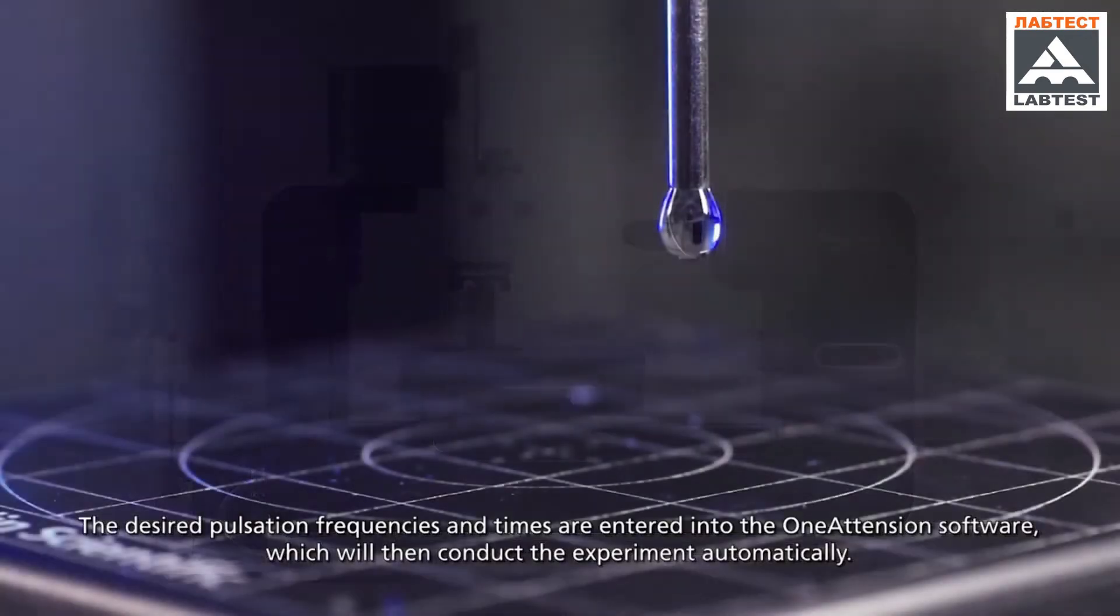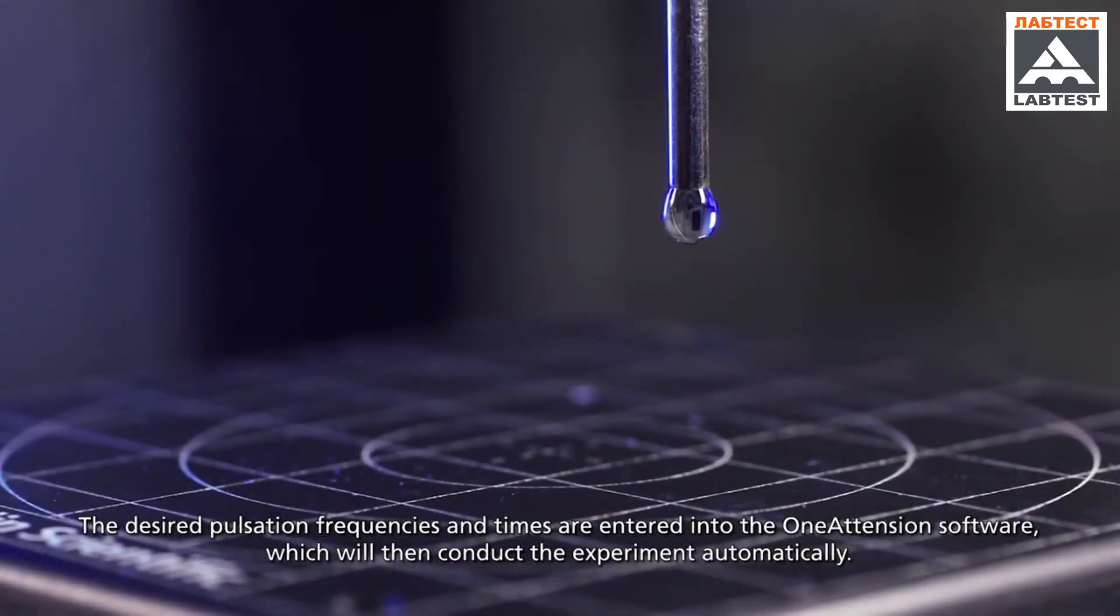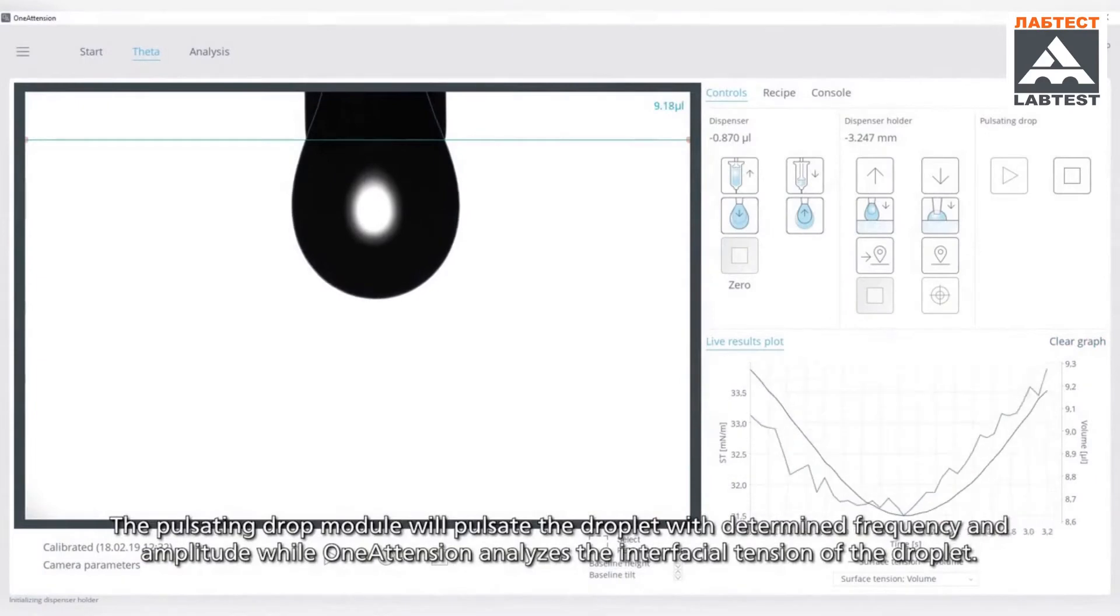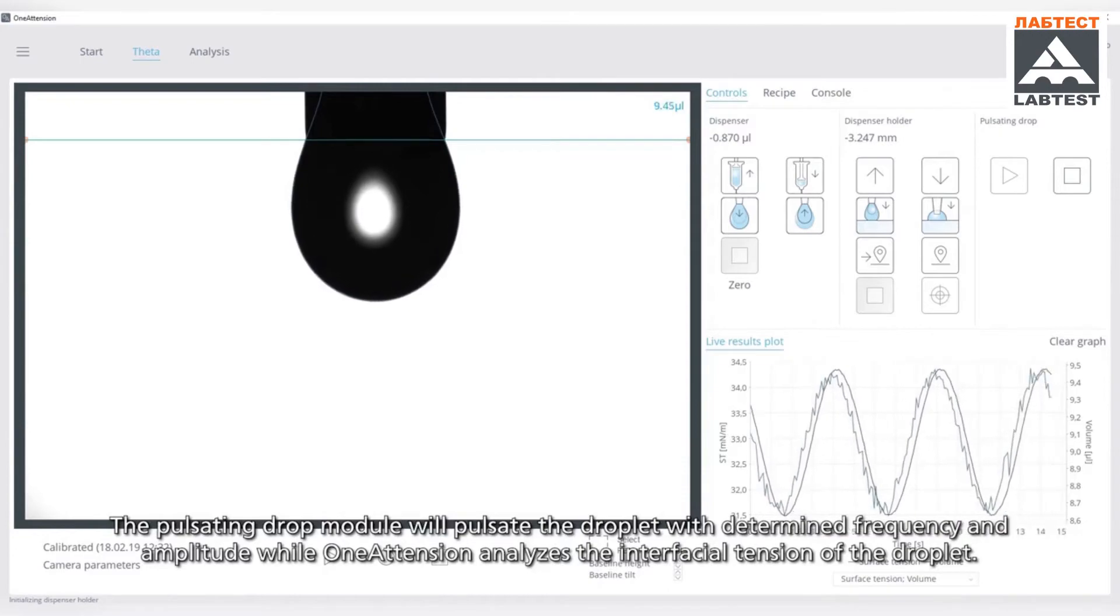The desired pulsation frequencies and times are entered into the OneAttention software, which will then conduct the experiment automatically. The pulsating drop module will pulsate the droplet with determined frequency and amplitude, while OneAttention analyzes the interfacial tension of the droplet.